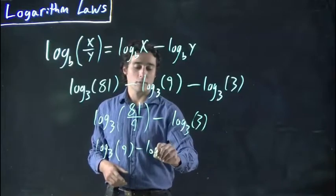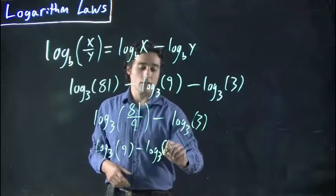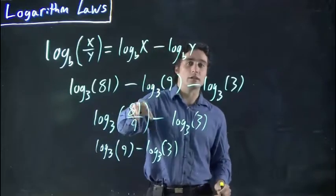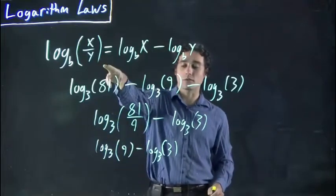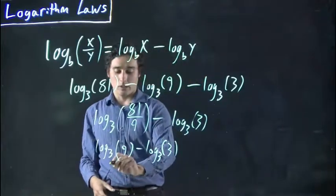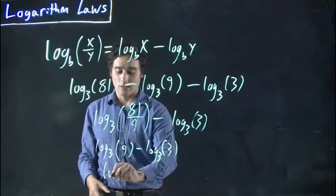minus log to the base 3 of 3. Okay, all we did was 81 divided by 9 using our quotient rule. So now we can still keep expanding this and simplifying it further.